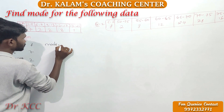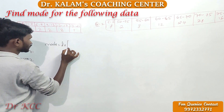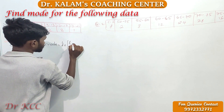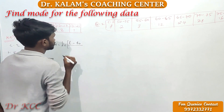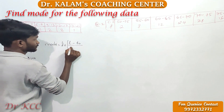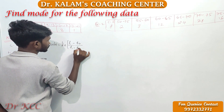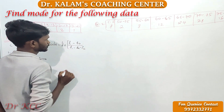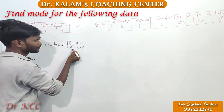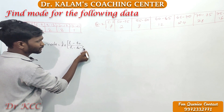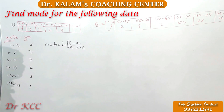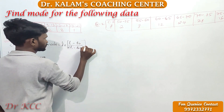What is the mode formula? Mode = L plus, then F1 minus F0 divided by 2 times F1 minus F0 minus F2, into H.